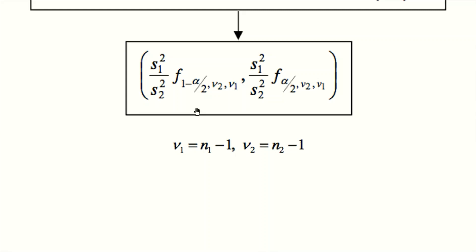You should also look at the degrees of freedom: nu 2 and nu 1 for the lower limit, and nu 2 followed by nu 1 for the upper limit. Nu 2 is N2 minus 1 and nu 1 is N1 minus 1. You can also find this information on page 7 of your formula book.